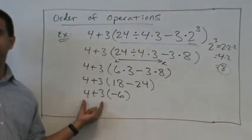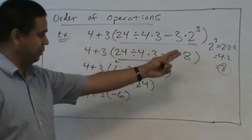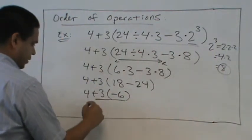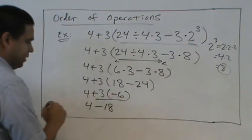Now be careful right there. Do we add or do we multiply? Multiply. Right. Multiply before adding and subtracting. Okay. So 4 plus 3 is 7, times negative 6 is negative 42.